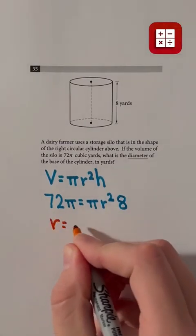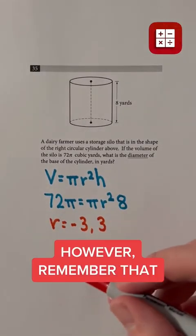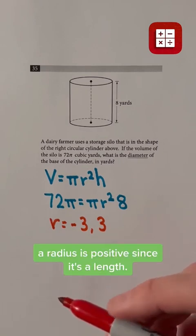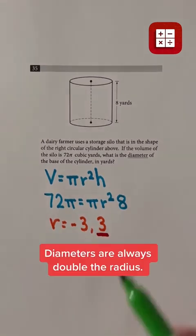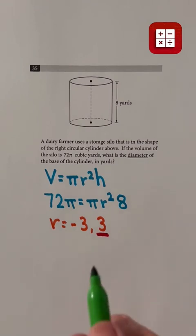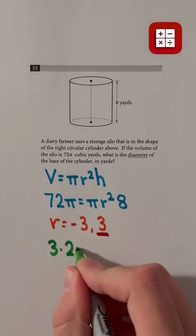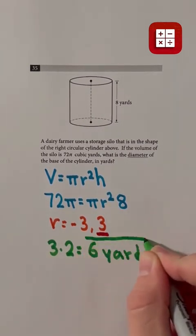Like I mentioned, r must be negative 3 or 3. However, remember that the radius is positive since it's a length, so let's only consider positive 3. Diameter is always double the radius, so let's just double 3 by multiplying it by 2 to get 6. Therefore, the diameter is 6 yards.